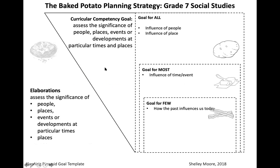Here's an example of a goal that had no elaboration, so we pulled it apart ourselves. The curricular competency goal is: 'Assess the significance of people, places, events, or developments at particular times and places.' Those phrases are actually the elaborations, so we just pulled them out — significance, people, places, events, developments, time and places. In terms of accessibility: we wanted everyone to understand that significance is basically influence of people, influence of place. Adding complexity: you can be influenced by time or a specific event. Adding further complexity — a big part of social studies — is how does the past influence us today?